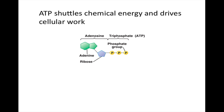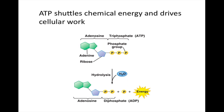ATP powers nearly all forms of cellular work. ATP stands for adenosine triphosphate. The adenosine part of ATP consists of adenine, a nitrogenous base, and ribose, a 5-carbon sugar. The triphosphate part is a chain of three phosphate groups. When the bond of the third phosphate group breaks by hydrolysis, the third phosphate is released along with energy. The ATP molecule now becomes adenosine diphosphate, or ADP, because it only has two phosphate groups.